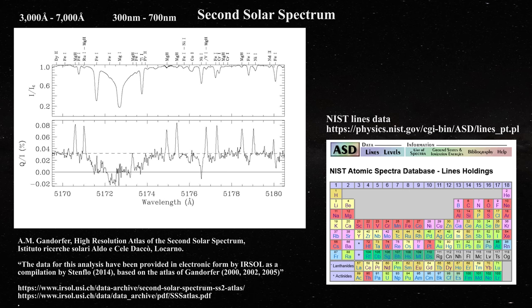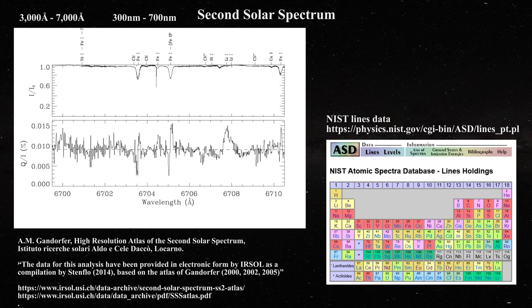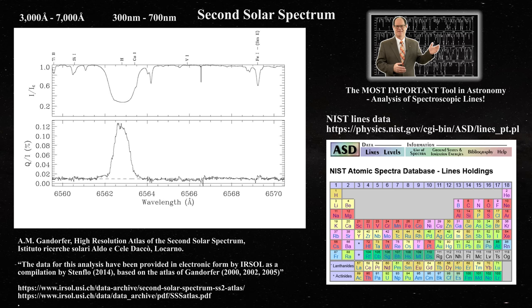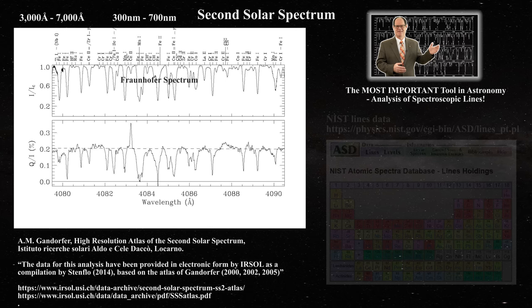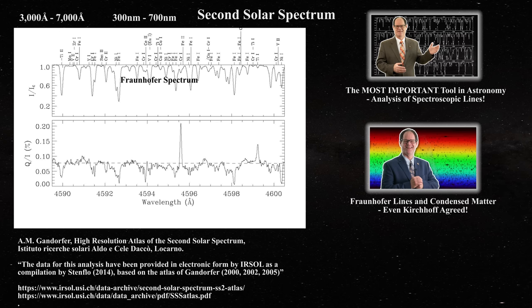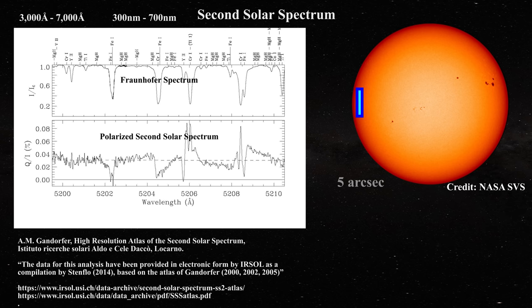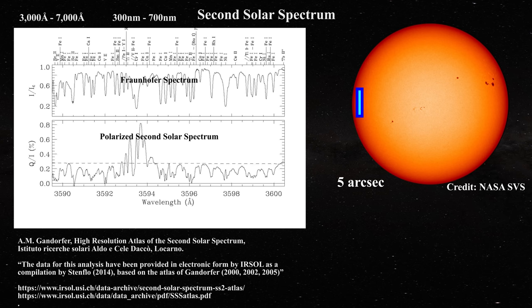The second solar spectra are marked in angstroms, but the NIST database differs by a factor of 10 since it is expressed in nanometers. For those who need a refresher, I had introduced the NIST database in a prior video. If you examine data from the second solar spectrum atlas, you will note that the normal Fraunhofer spectrum is displayed at the top — a refresher about the Fraunhofer spectrum is contained in another video. Below this spectrum is the polarized spectrum.